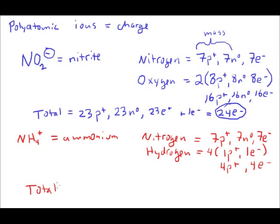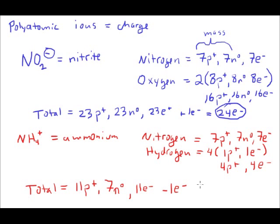Our total number of subatomic particles: seven protons plus four protons gives a total of 11 protons. The number of neutrons will be contributed only by the nitrogen — that will be seven neutrons. For the number of electrons, seven plus four is 11 electrons, but I need to subtract one electron to account for the positive charge. So that works out to be a total of 10 electrons. Determining the number of electrons is the trickiest part of this.